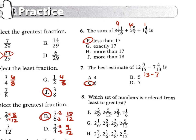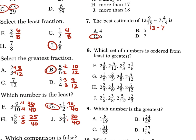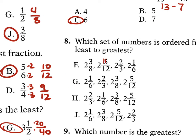Problem 8 asks which set is ordered least to greatest. All have whole number 2, so compare fractions with denominators 8, 12, 3, and 6 — LCD is 24, converting to 10, 9, 16, and 4 over 24. That's not least to greatest. The 1 sixth (4 over 24) must go first. Looking at the answer choices, J is the correct order with 2 and 3 eighths coming appropriately in the sequence.